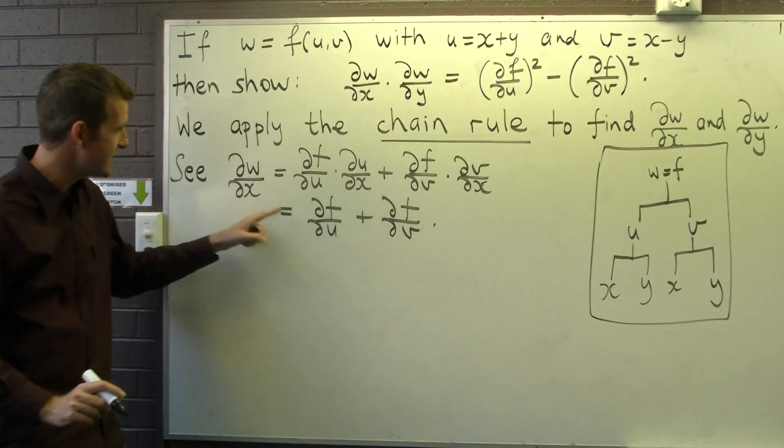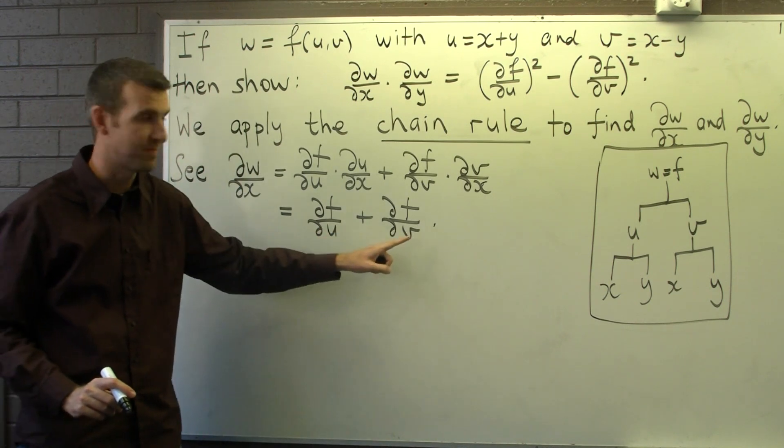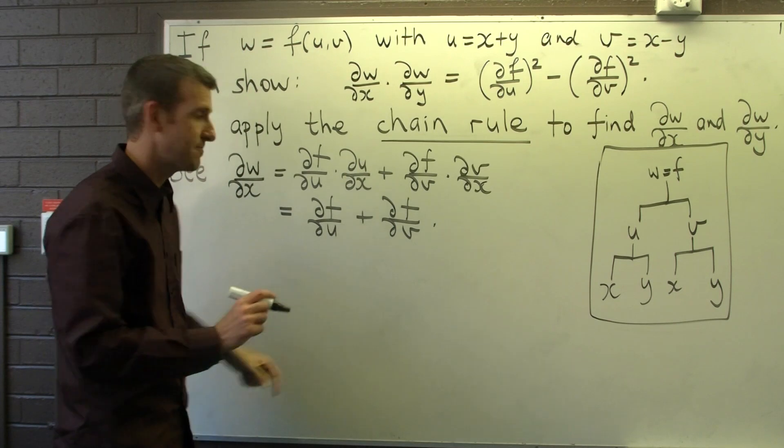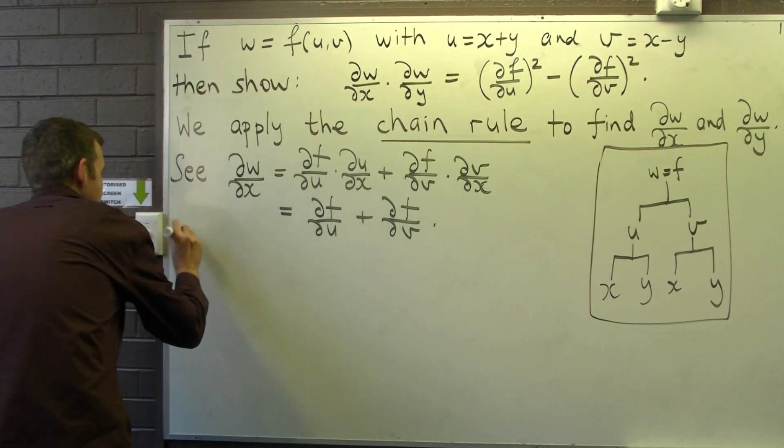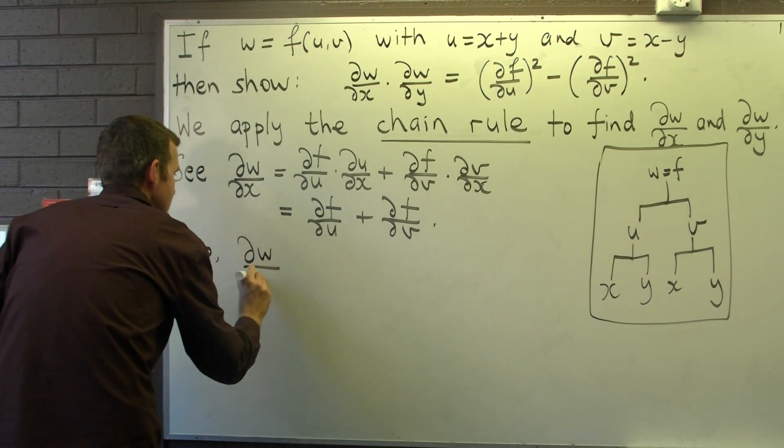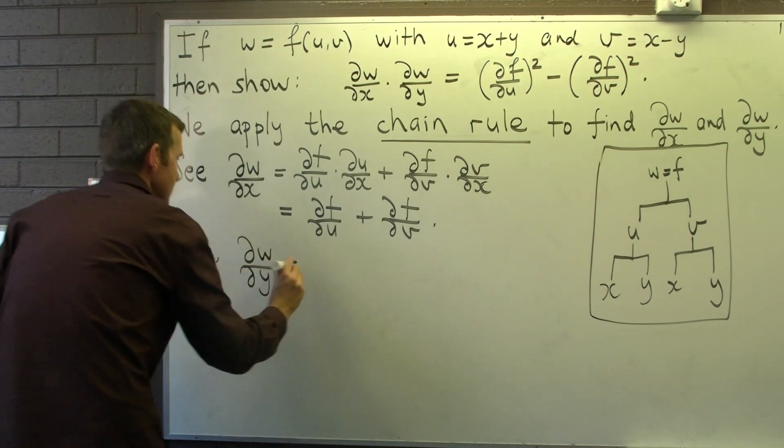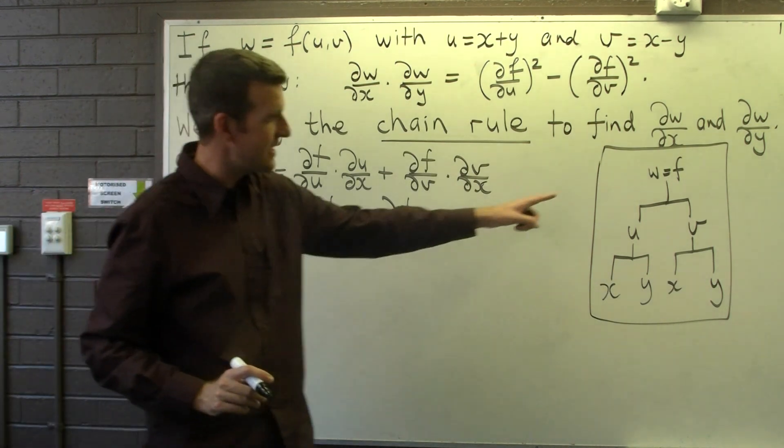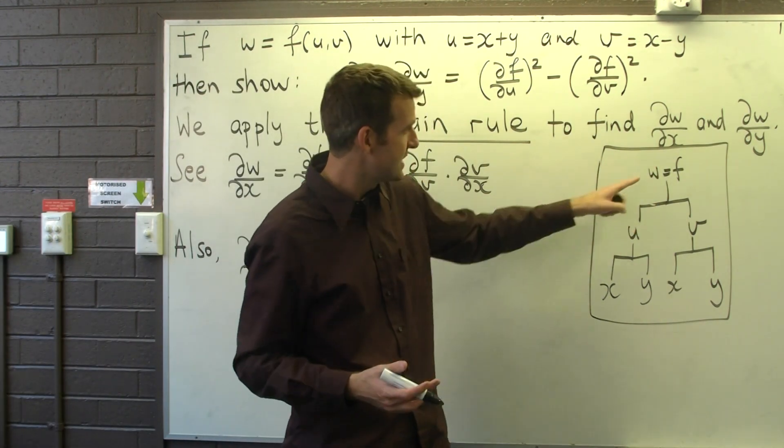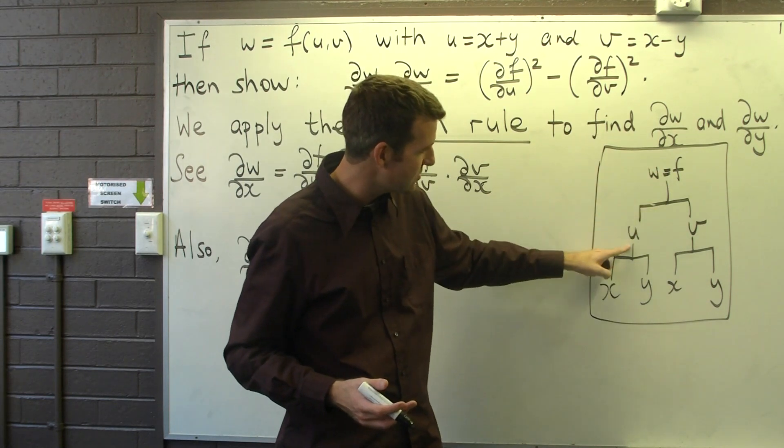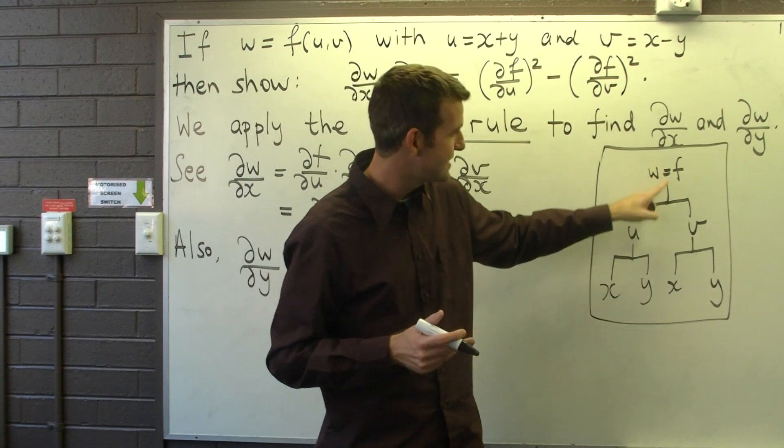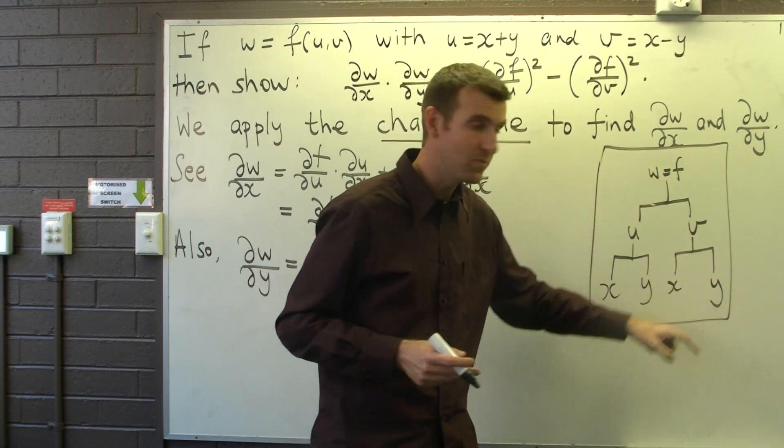Okay, so now we start up here and go down the roads that lead to a y. So it's going to be ∂f/∂u times ∂u/∂y plus the other branch ∂f/∂v times ∂v/∂y.